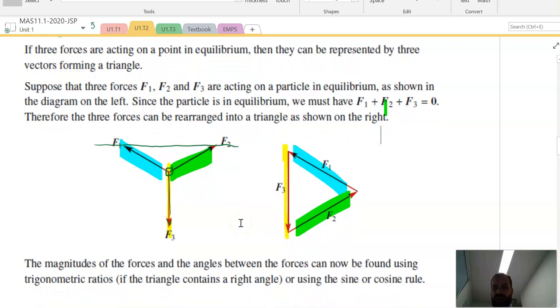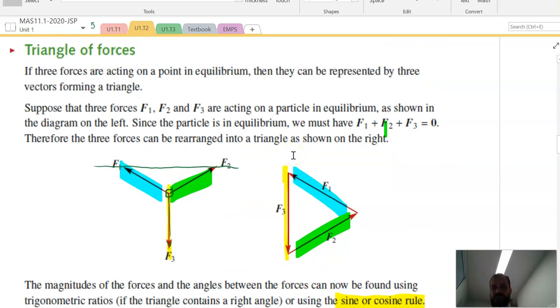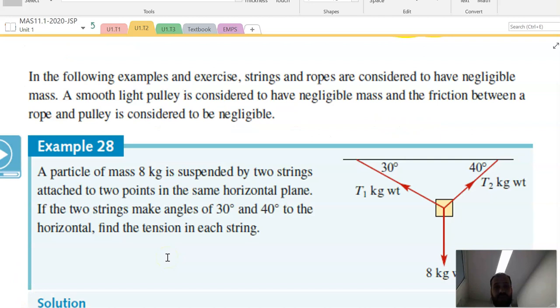Now, you've had lots of practice now using the sine and the cosine rule. And essentially, whenever you find yourself in like a triangle of forces type problem, that's how you're going to solve it, using some sort of sine or cosine rule. So here's exactly the sort of question I was talking about. A particle of mass 8 kilograms is suspended by two strings attached to two points in the same horizontal plane. And we've told the angles there, 30 and 40. Find the tension in each string. So we're looking for the magnitude of those vectors. So let's run through it.